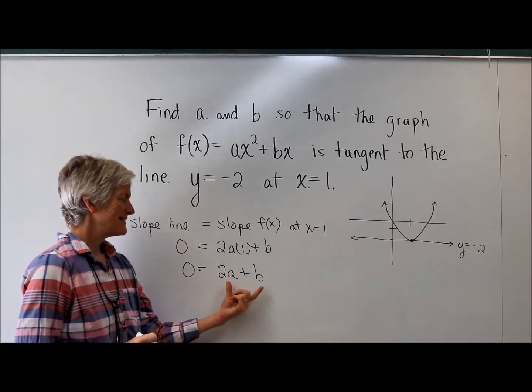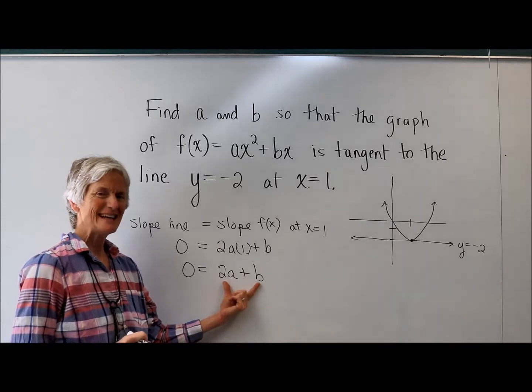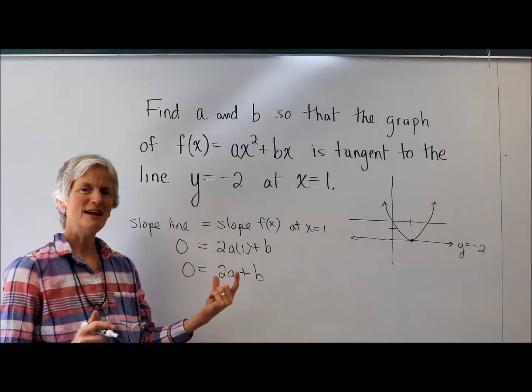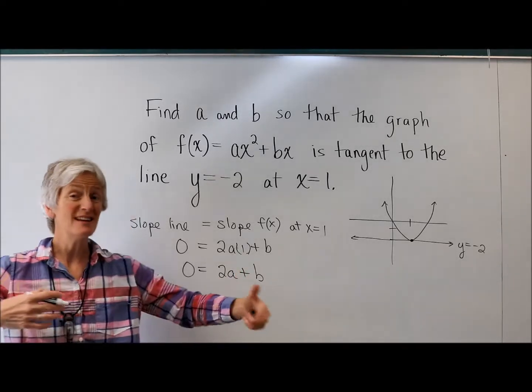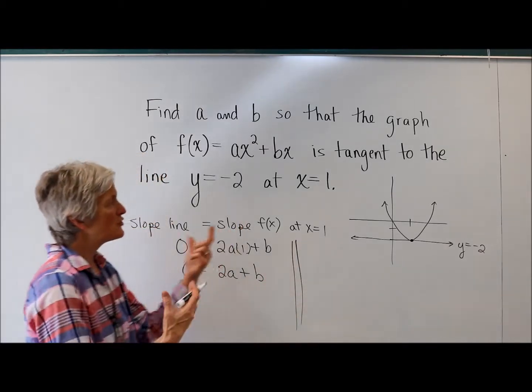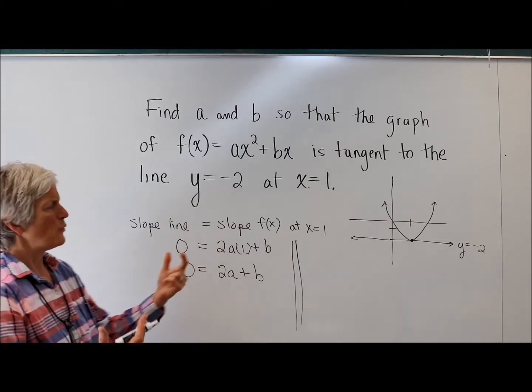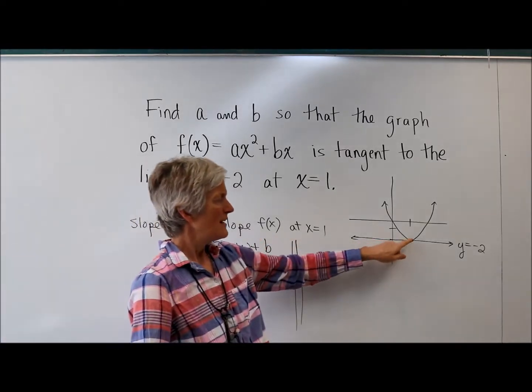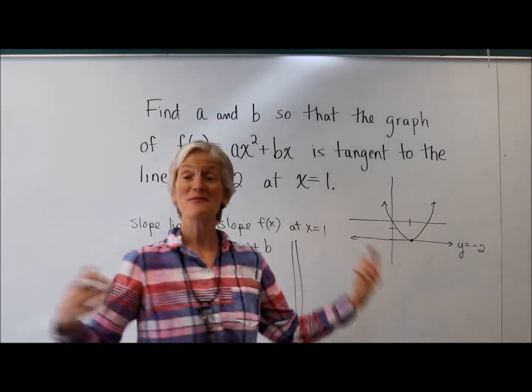So I still have two things. So when I have two variables, don't I usually need at least two equations to solve? That would be good if you get a second equation. All right. So let's find another relationship between a and b. What else do I know? Well, you do have a point there.